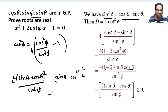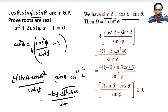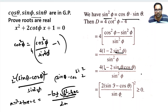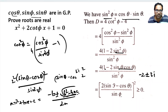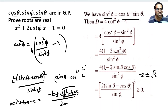Why must b² - 4ac be greater than or equal to 0? Because the roots of ax² + bx + c = 0 are given by [-b ± √(b² - 4ac)] / 2a. If b² - 4ac is less than 0, the term under the square root becomes negative, making the roots imaginary — for example, something like -2 ± 3i. We do not want imaginary solutions; we want real solutions. If b² - 4ac ≥ 0, we will not get an imaginary part — we may get irrational roots like -2 ± √3 or √5, but those are still real.